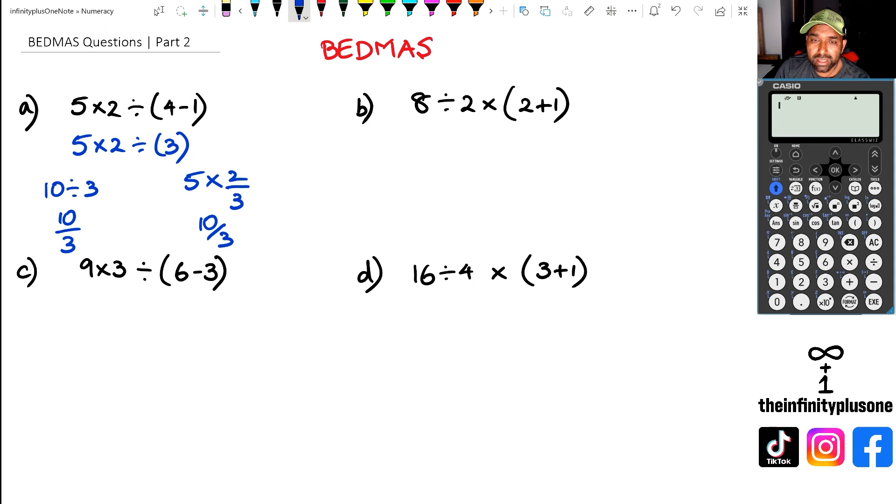Now with question B, we're going to do the brackets first. So we've got 8 divided by 2 multiplied by brackets, which is 2 plus 1, that's going to be 3. After brackets, we've got to do division first. So 8 divided by 2 is 4, and then we've got 4 times 3, which happens to be 12. Working this out, 8 divided by 2 multiplied by bracket 2 plus 1, and we've got 12 here.